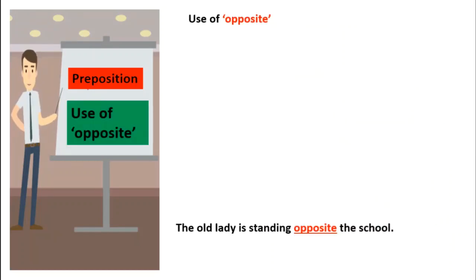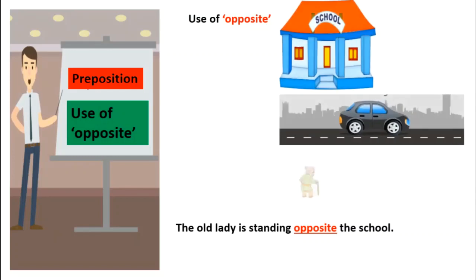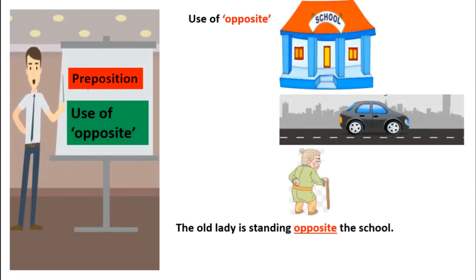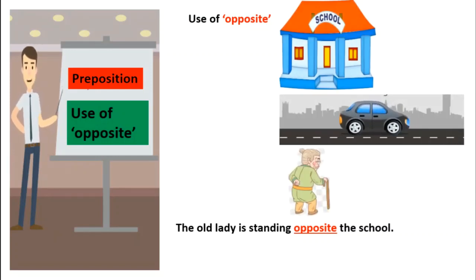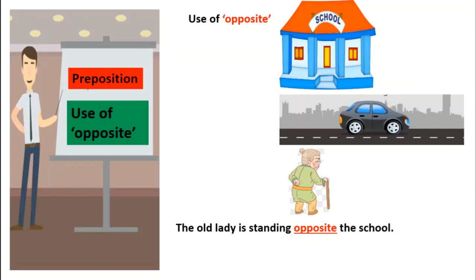Use of 'opposite'. The old lady is standing opposite the school. When two things are face to face with a gap between them, we use 'opposite'.